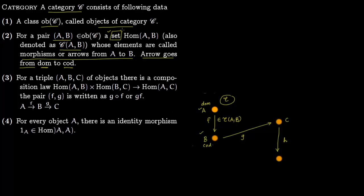Notice that we are writing Hom(A,B) as a set. In general this is not a set but a class, but for our purposes we will always treat it as a set. So Hom(A,B) will always be a set. Note the distinction: you have a class of objects, and a set of morphisms between each pair.